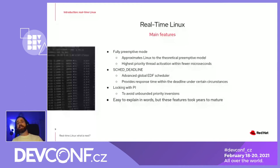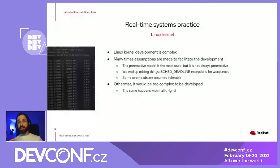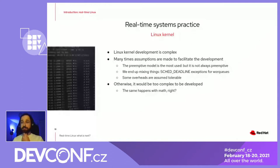In the same way that mathematics, Linux is complex. Many times some assumptions are made to facilitate development. For example, the preemptive mode of Linux is not the same as the preemptive mode in theory, because we can disable preemption temporarily. Likewise, SCHED_DEADLINE accepts some things that are not yet formalized — for example, per-CPU threads mixed with global scheduling.